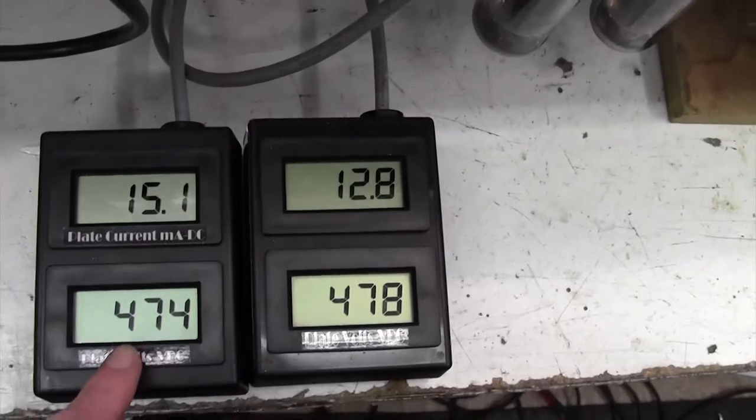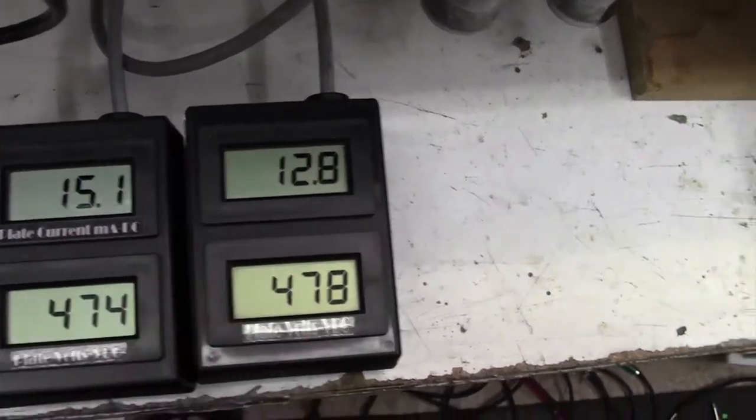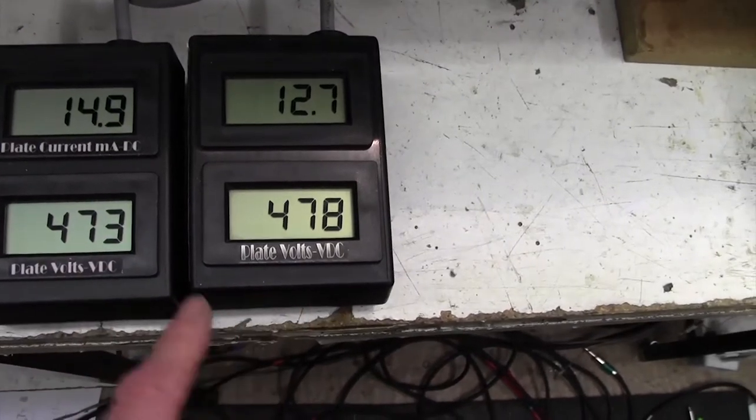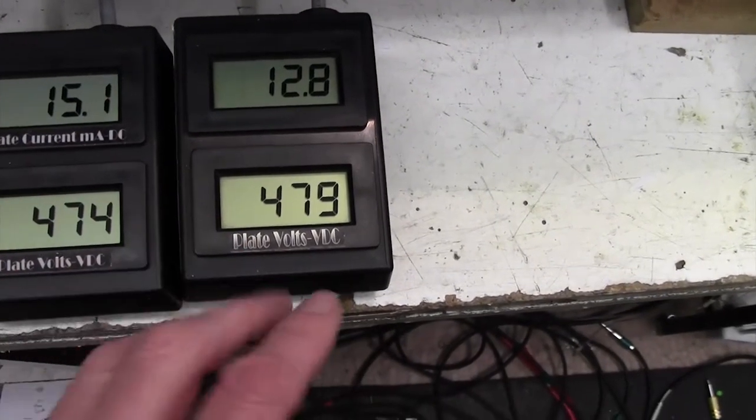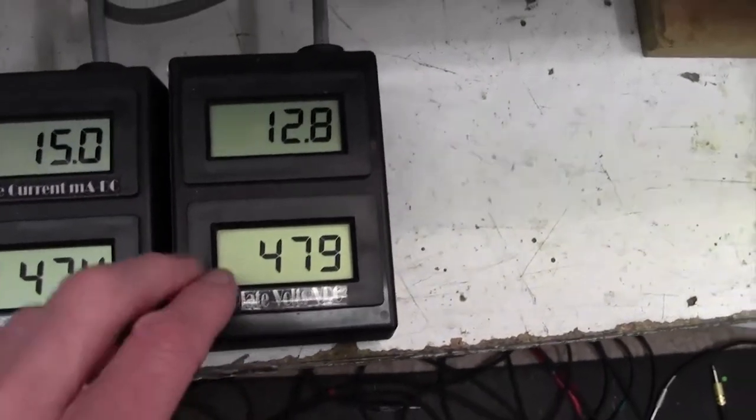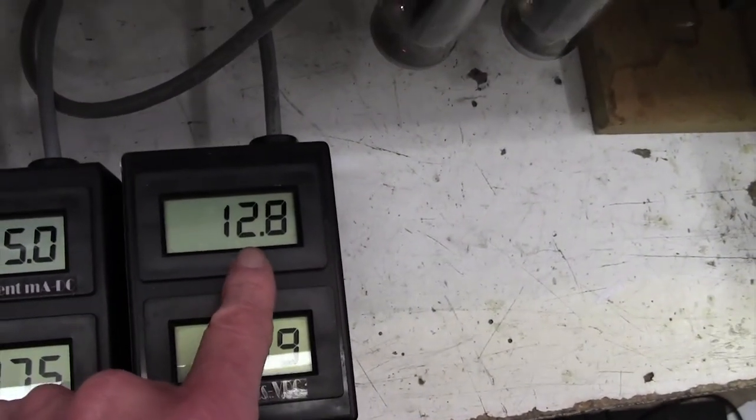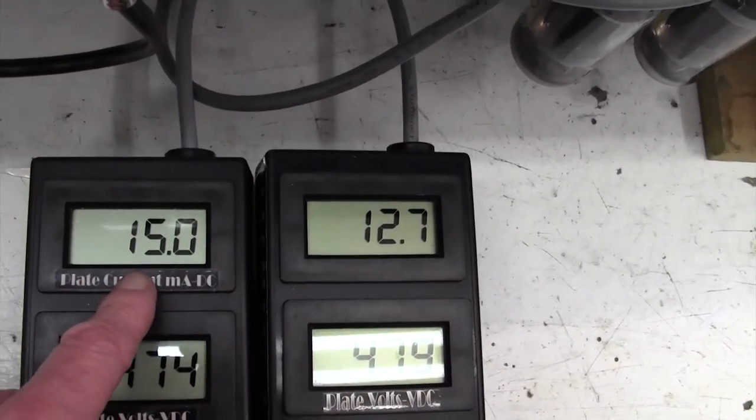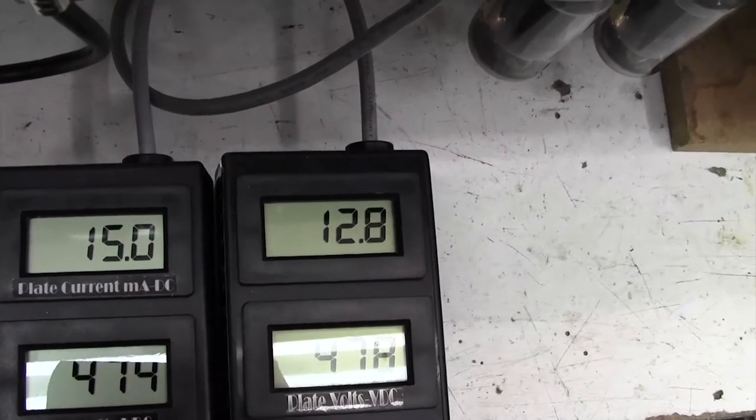You can read off the plate voltage and the plate current on the meter. So just to look at these meters, plate voltage is 470, it's interesting it measures slightly differently on each one. 475 roughly, and on this valve it's 12.8 milliamps. I've got the bias turned right down, and on this valve it's 15 milliamps. Again I've got the bias turned right down.